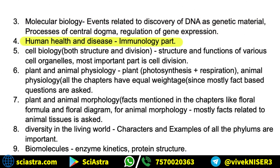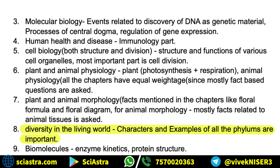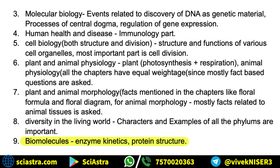Then cell biology — both structure and division. So structure and functions of various cell organelles; the most important part is cell division. Plant and animal physiology — plant photosynthesis plus respiration, and for animal physiology all chapters have equal weightage because mostly fact-based questions are asked. Then plant and animal morphology — facts mentioned in chapters like floral formula and floral diagram. For animal morphology, mostly facts related to animal tissues are asked. Then diversity in living world — characters and examples of all phylums are important. For biomolecules, enzyme kinetics and protein structures are important.